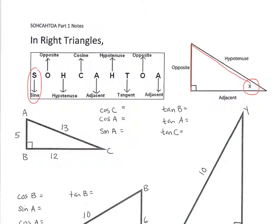No matter what, if you have, let's say, a 30-degree angle, the opposite side divided by the hypotenuse is always going to be the same, no matter if it's a huge triangle or a tiny triangle. The ratio is always going to be the same because those triangles are similar. So sine is a fraction of opposite over hypotenuse. Cosine is adjacent divided by hypotenuse, and tangent is opposite divided by adjacent. We call this SOHCAHTOA — a mnemonic device to memorize opposite, adjacent, hypotenuse for sine, cosine, and tangent.